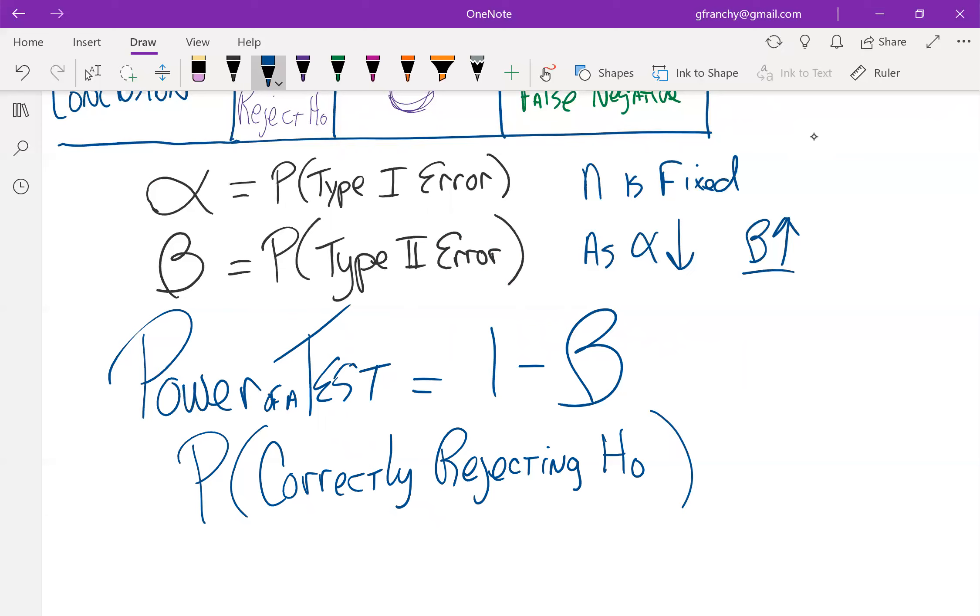So this is the probability of rejecting the null hypothesis given that the null hypothesis is actually false. So that's conditional probability there.